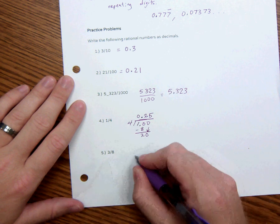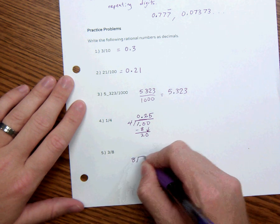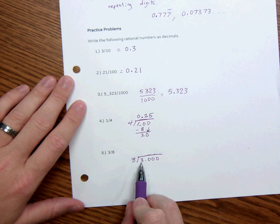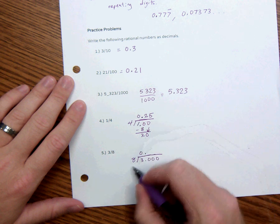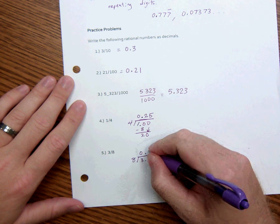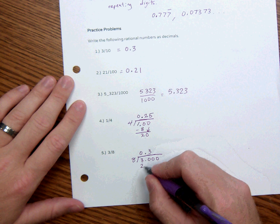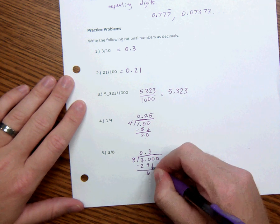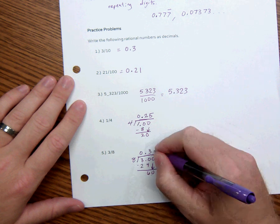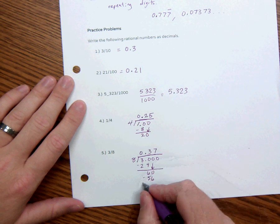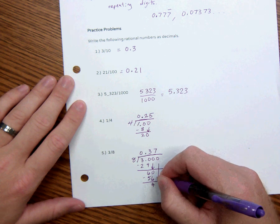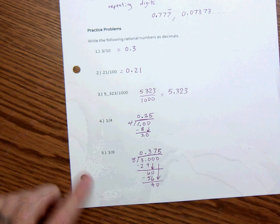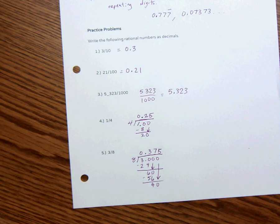This one right here, 3/8. 8 goes into 3 zero times. 8 goes into 30 three times, that's 24. 30 minus 24 is 6, bring down the 0. 8 goes into 60 seven times. 8 goes into 40 five times. Notice all of these stop, so every single one of these is a terminating decimal.